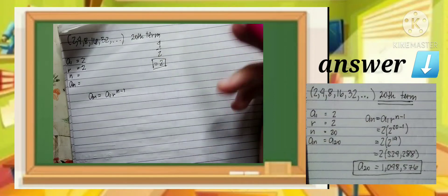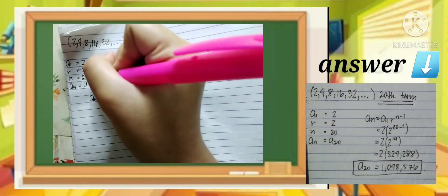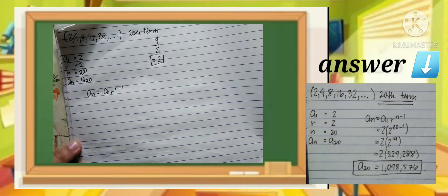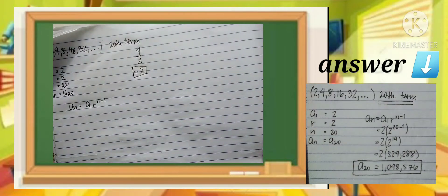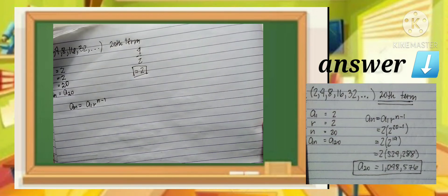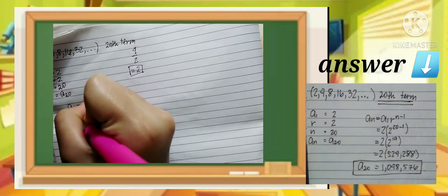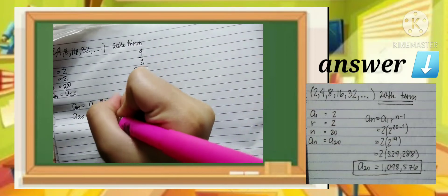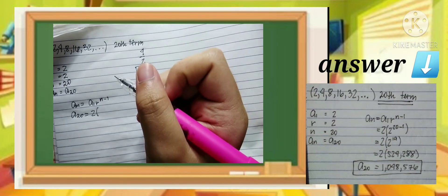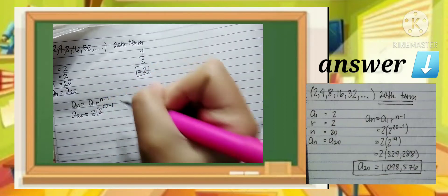The nth term we need is 20. We'll use this formula: a sub n equals a sub 1 times r raised to n minus 1. Our a sub n is 20. A sub 1 is 2. Our ratio is 2. And n is 20 minus 1.